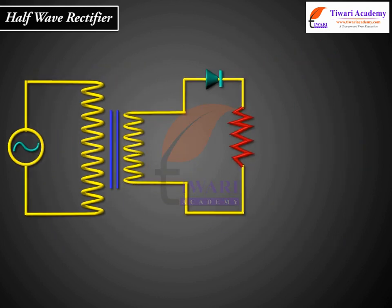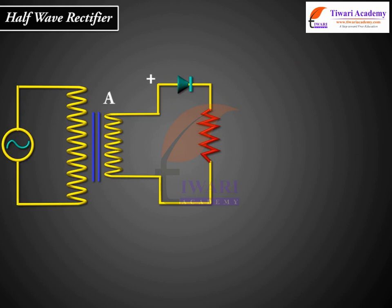When the voltage at terminal A is positive, the diode is forward biased and it conducts. There is a current through the load resistor RL and we get an output voltage as shown.